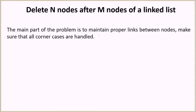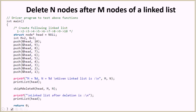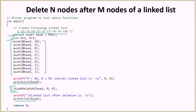The main part of this problem is to maintain proper links between the nodes and make sure that all the corner cases are handled. So let's dive into the code. Here we have the driver method where we are going to create a linked list having 10 elements from 1 to 10. We create a head node, then we give the values m equal to 2 and n equal to 3. We insert all the elements from 1 to 10, then print the linked list, call the function skipMdeleteN, and then print the linked list again.